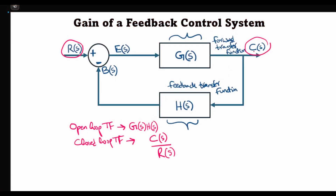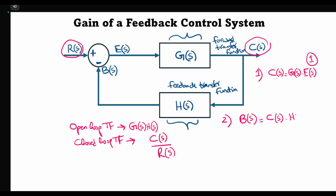To find the closed loop transfer function, we have to express C(s) in terms of R(s), which we can do by analyzing this block diagram. Looking at the forward gain block G(s), we can write the controlled output signal in terms of the error signal. This gives us the first equation: C(s) = G(s) · E(s). Similarly, for the feedback path, we can write that the feedback signal B(s) is equal to the controlled signal C(s) times the feedback transfer function H(s).